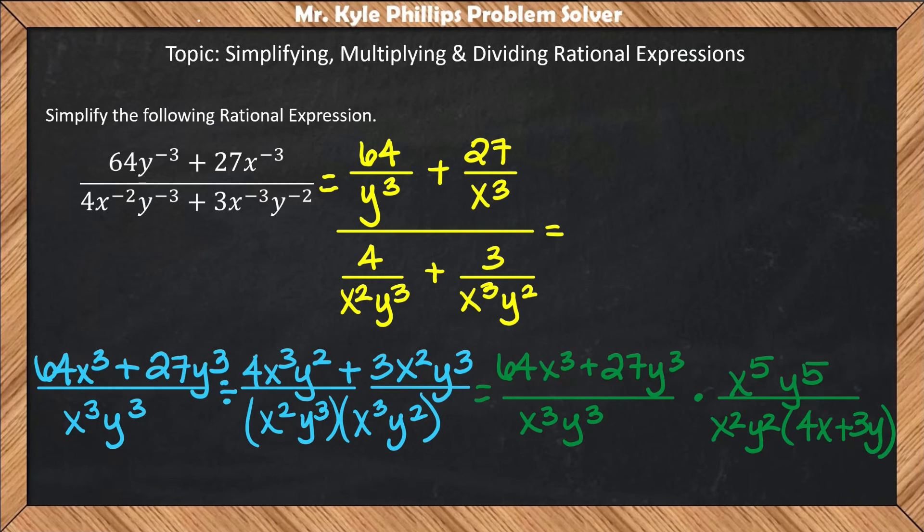Here's what I have, and I'll cross-simplify everywhere I can. This x³y³ can reduce this x⁵y⁵. These would cross out, leaving me x²y². Then those can reduce with the denominator. If I multiply straight across, I'll have (64x³ + 27y³)/(4x + 3y).